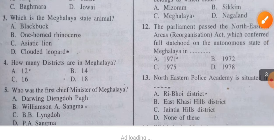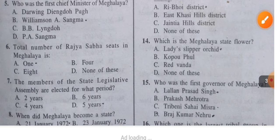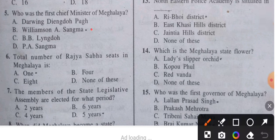Question 5: Who was the first Chief Minister of Meghalaya? The answer is Williamson A. Sangma. Question 6: The total number of Rajya Sabha seats in Meghalaya is how many? The answer is one.